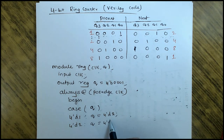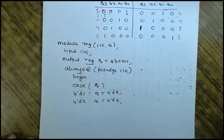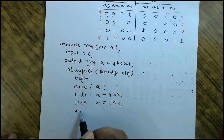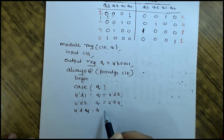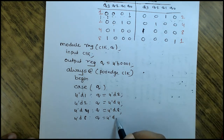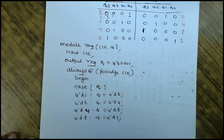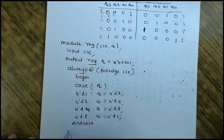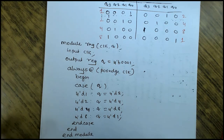Similarly when q is 2 it should be assigned a new value — the case statement is just copying down the truth table as it is. 4'd4: q should be assigned with 4'd8 as in the truth table. When q is 4'd8, q should be assigned back to 4'd1 — it continues. You can have a default statement or omit it. End case, end always, end module.